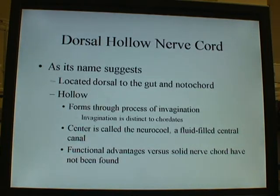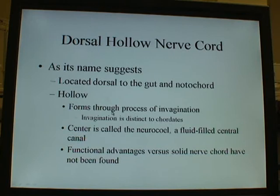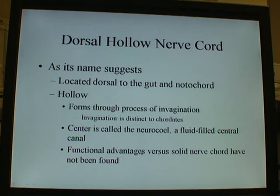The dorsal hollow nerve cord is hollow, as the name suggests, and is located dorsal to the gut and notochord. It is formed through a process called evagination. Compared to the solid nerve cords found in other animals, there is really no functional advantage between those and the dorsal hollow nerve cord — it is simply the form found in chordates.